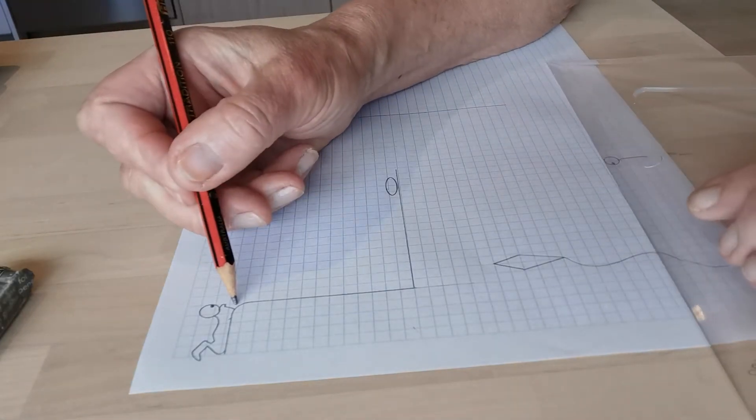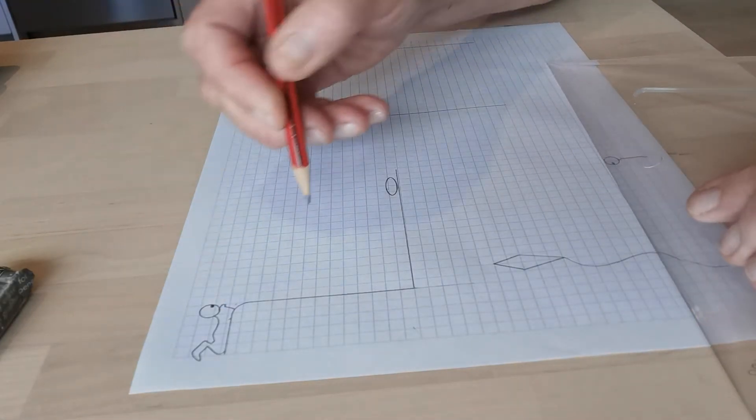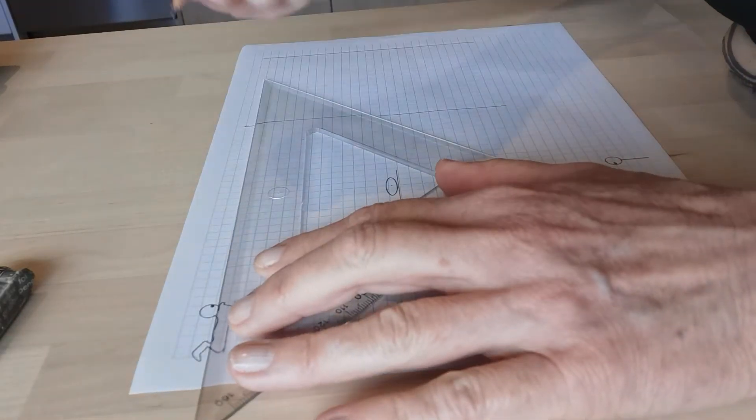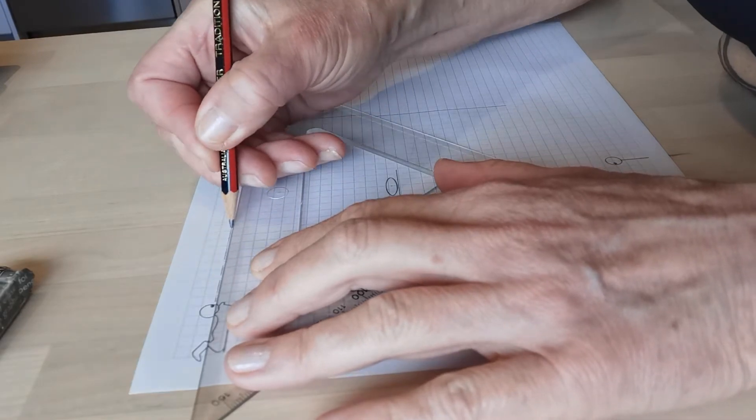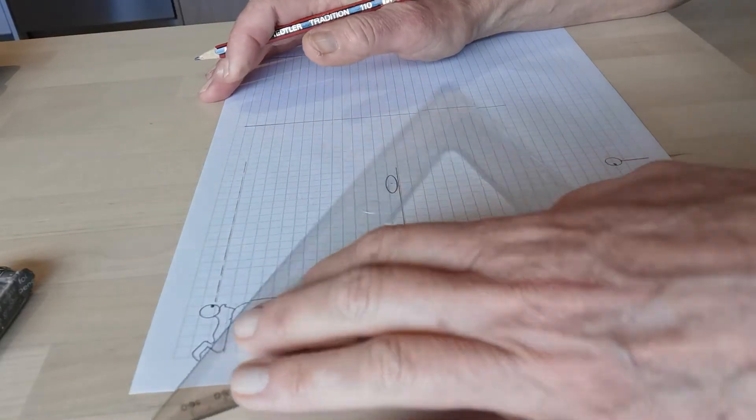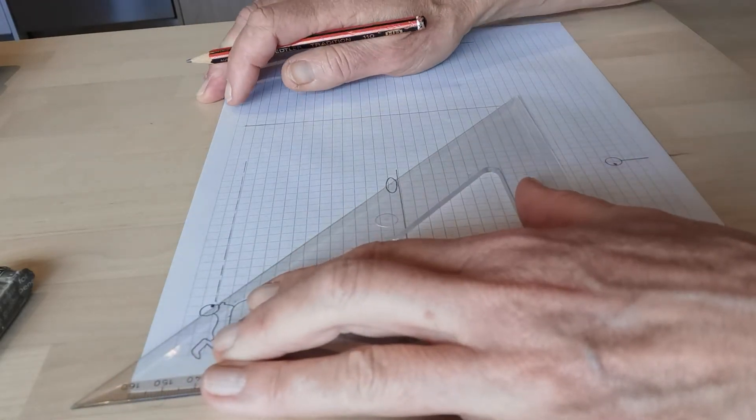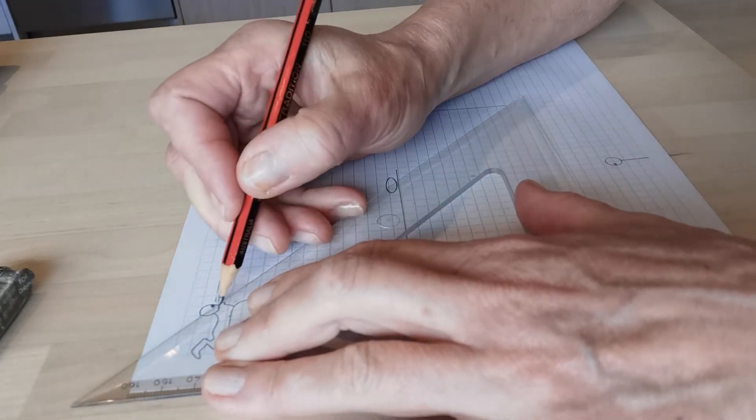So imagine you're on top of a bunk bed here and you look down and you see the two dollar coin you've just dropped. So here is the horizontal line that your eye is on, like your eye level line, and this is your line of sight to the middle of the coin.